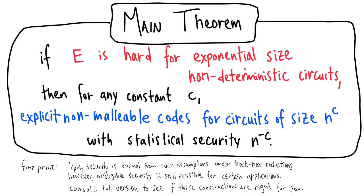Note that 1 over poly security is optimal from such assumptions under black box reductions. However, negligible security is still possible for certain applications. Consult a full version or your friendly cryptographer to see if these constructions are right for you.